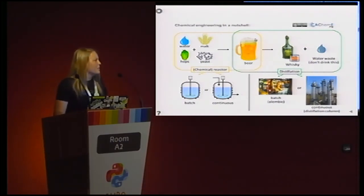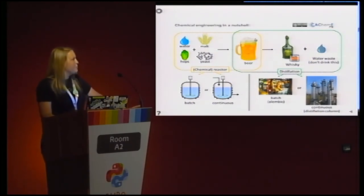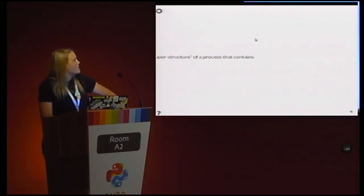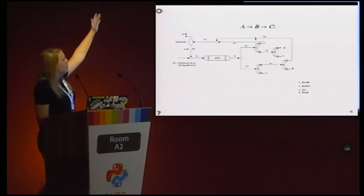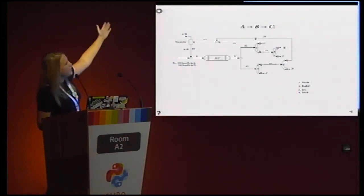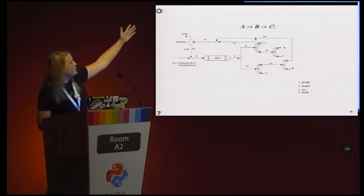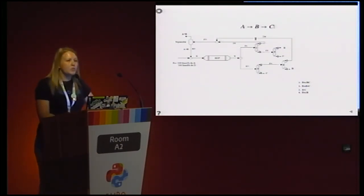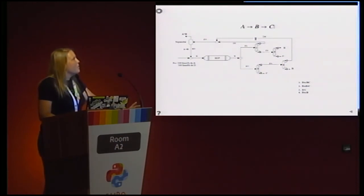Distillation is the same: you have batch or continuous. In the superstructure, we go from A to B and then to C using reactors and a range of distillation columns. We determine what to do with minimum environmental impact.